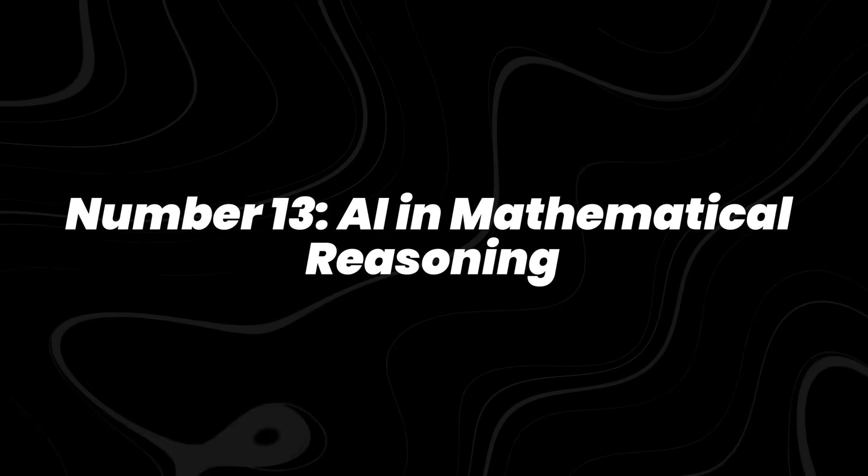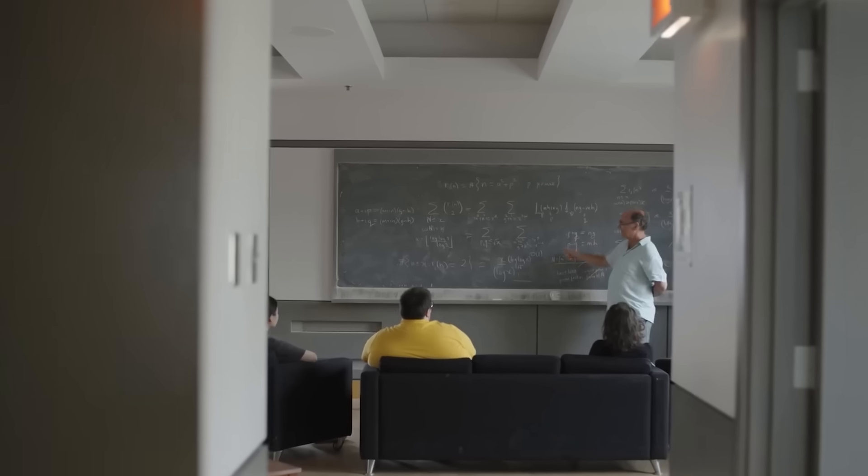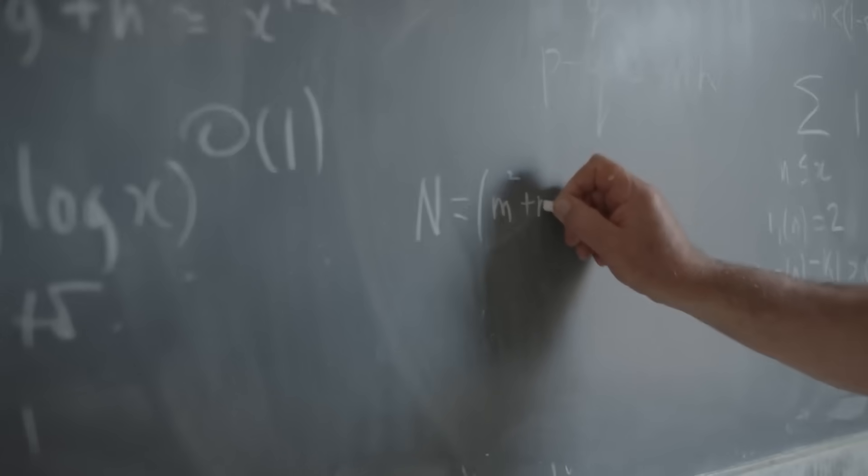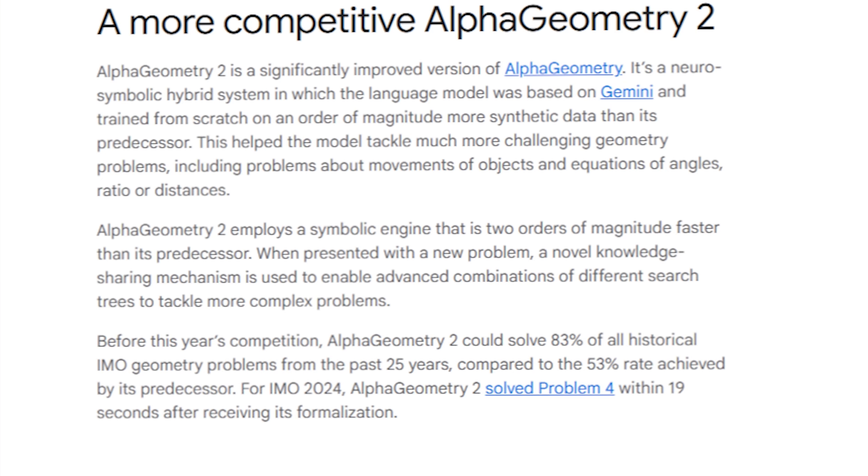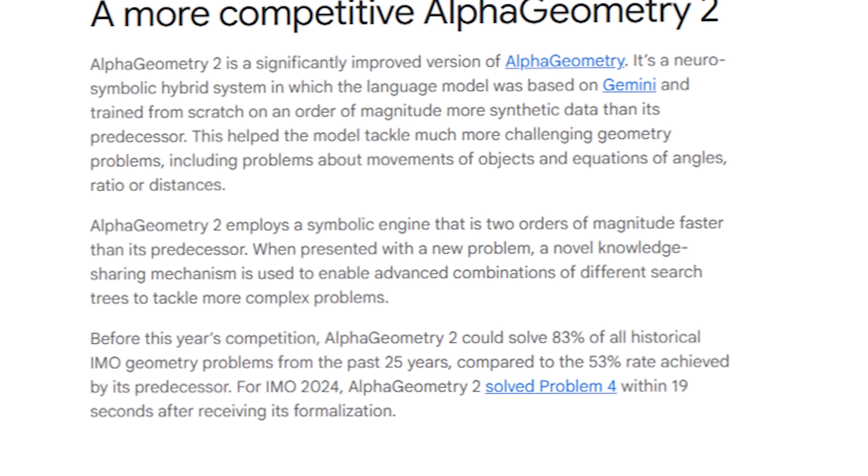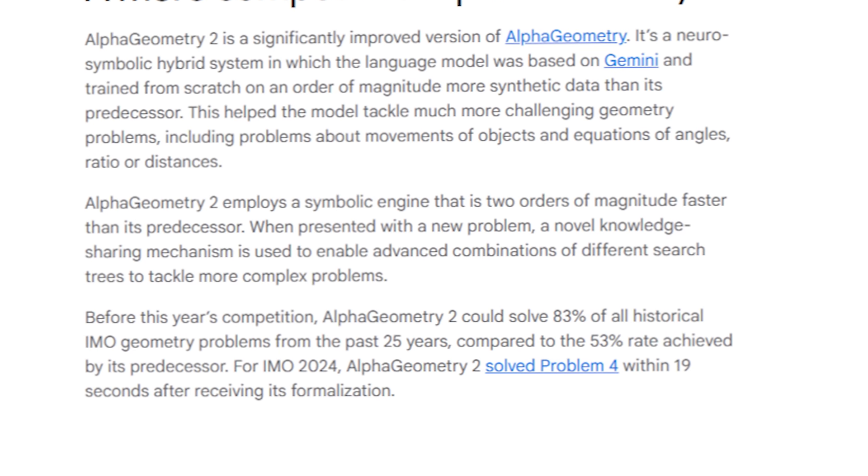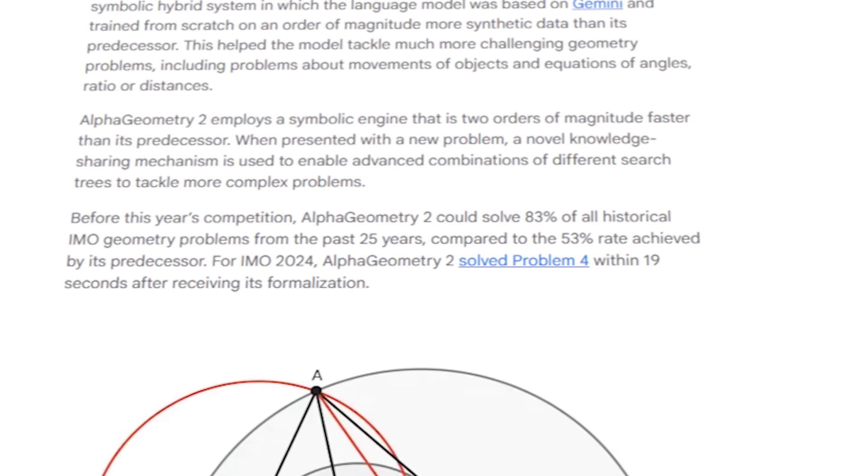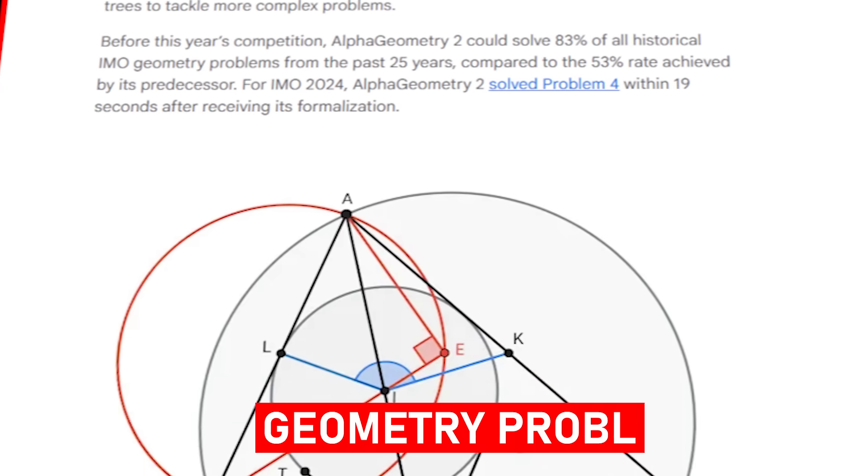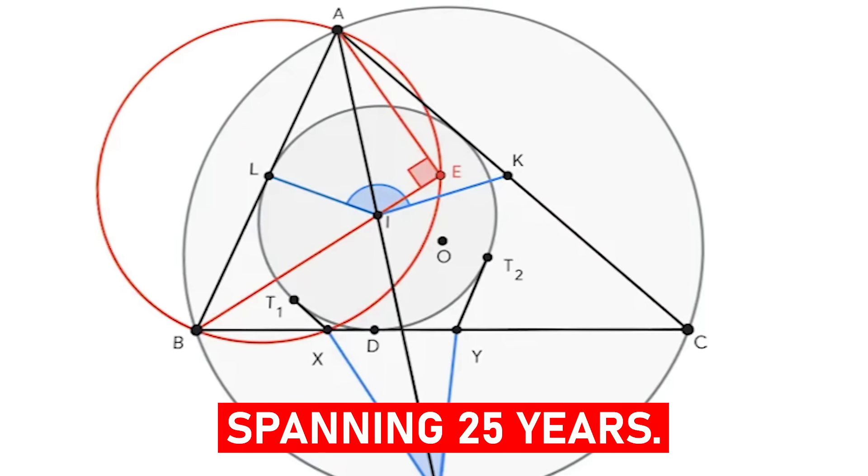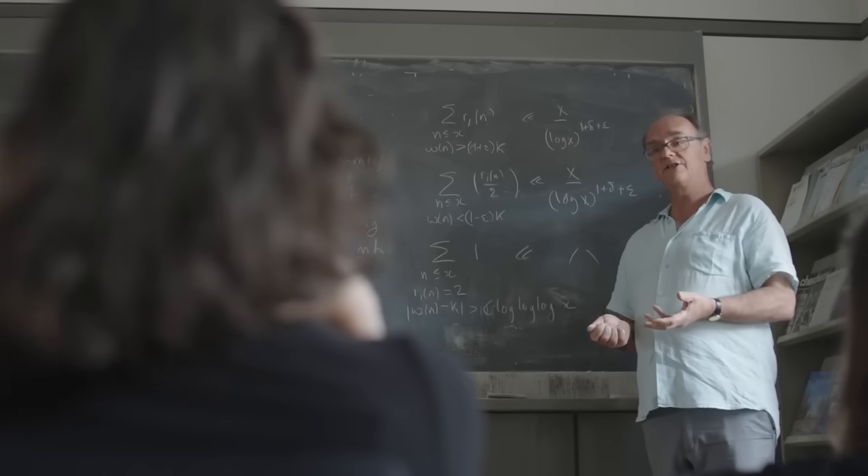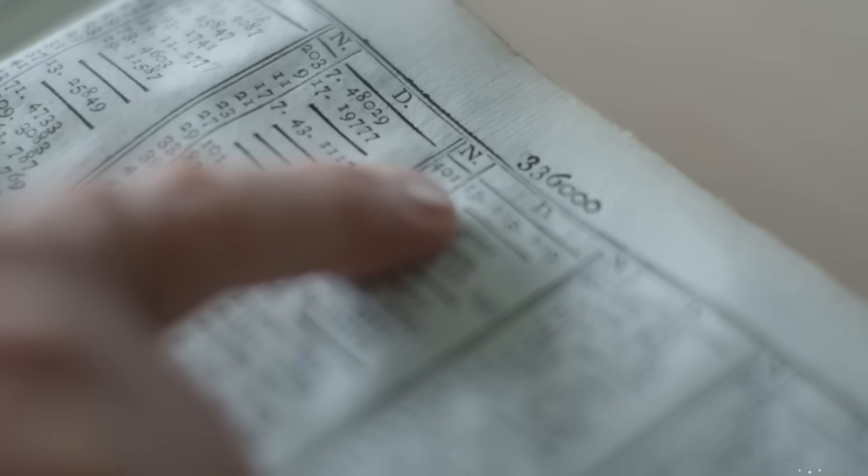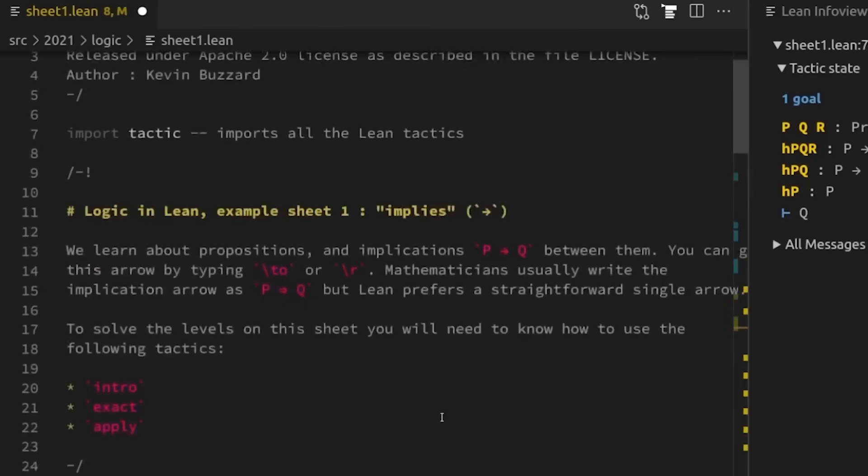Number 13, AI in mathematical reasoning. AI is now competing with the world's best young mathematicians. DeepMind's Alpha Geometry, introduced in 2024, solved 83% of international mathematical Olympiad geometry problems spanning 25 years. That's comparable to a gold medalist's performance. What makes it unique is transparency. Instead of just spitting out answers, the system shows step-by-step reasoning like a human.